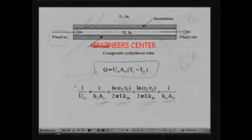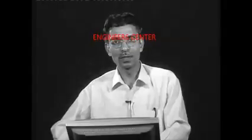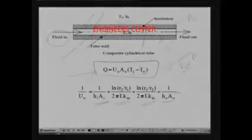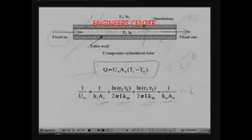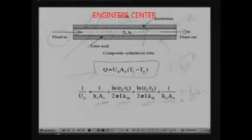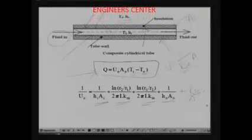Sometimes what happens is you can have additional resistances. For example, when a fluid is flowing through a tube, if the fluid is not very clean, it can form a scale inside the tube. So there can be scale formation here. The effect of scale formation means there will be another resistance term added because of the scale. If you know the resistance offered by the scale, you can find the new overall heat transfer coefficient.